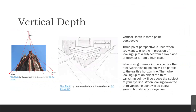Then we have vertical depth, which is three-point perspective. Three-point perspective is used when you want to give the impression of looking up at a subject from a low place, or down at something from a high place. When using three-point perspective, the first two vanishing points will be parallel to the Earth's horizon line. When looking up at an object, the third vanishing point will be above the subject at your eyeline. When looking down, the third vanishing point will be below the ground, but still at your eyeline — you're always basing your horizon line off of your eyeline. In the diagram, you can see two vanishing points that go down, your eyeline is basically here, and then the vanishing point is above.